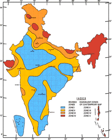Zone 5 covers the areas with the highest risk, suffering earthquakes of intensity MSK IX or greater. The IS code assigns a zone factor of 0.36 for Zone 5, which structural designers use for earthquake-resistant design of structures in this zone. The zone factor of 0.36 is indicative of the effective zero-period ground acceleration level in this zone. It is referred to as the Very High Damage Risk Zone. The regions of Kashmir, the western and central Himalayas, north and middle Bihar, the northeast Indian region, the Rann of Kutch, and the Andaman and Nicobar group of islands fall in this zone. Generally, areas having trap rock or basaltic rock are prone to earthquakes.